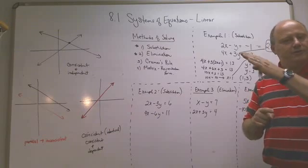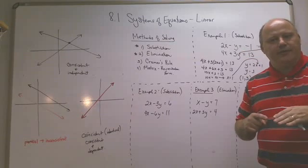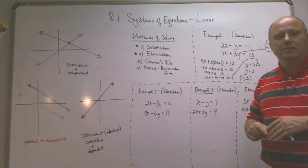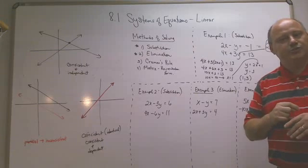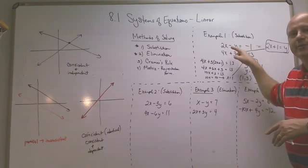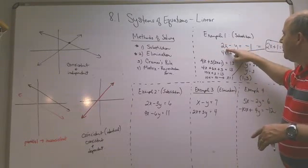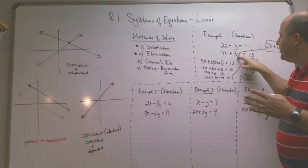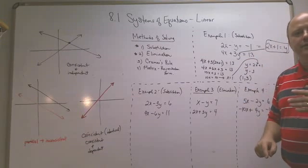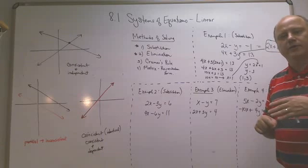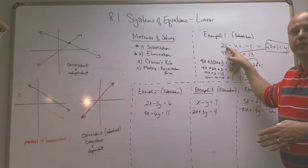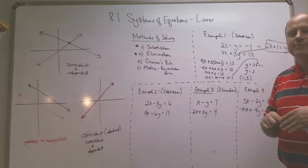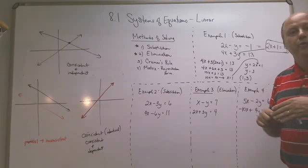That's the common solution. When solving a system, you're finding the common solution, because graphs are just lines that represent solutions to a particular equation. The equation 2x minus y equals negative 1 has infinitely many solutions, and so does the other one — but we're finding the ones they have in common. In this case there's only one: (1, 3) works for both equations. You can check: 2 times 1 minus 3 is negative 1, and 4 times 1 plus 3 times 3 equals 13.